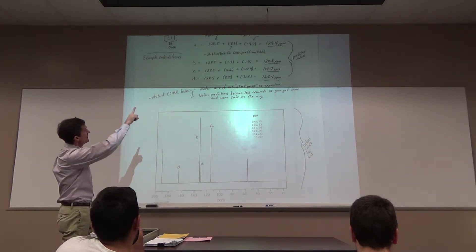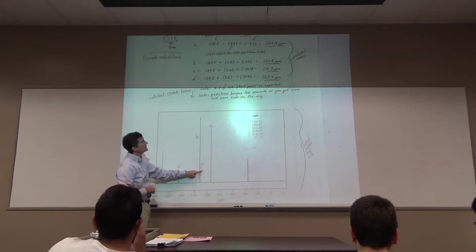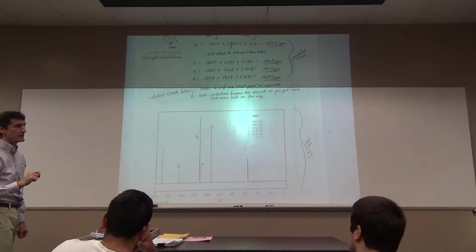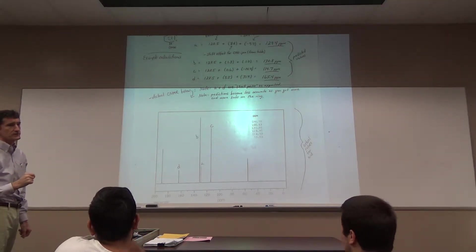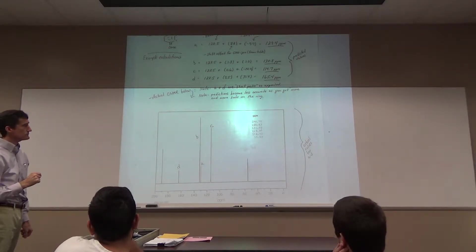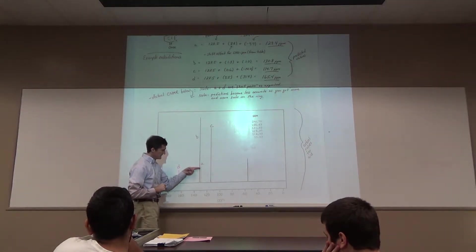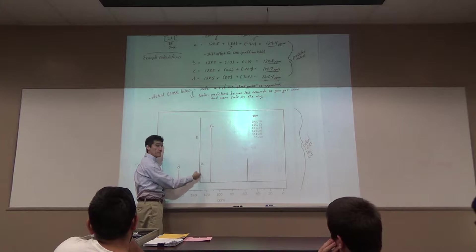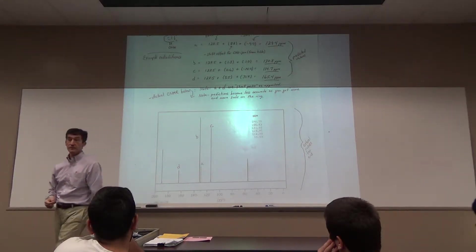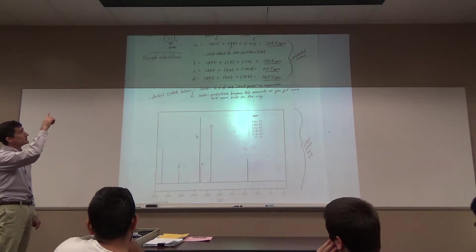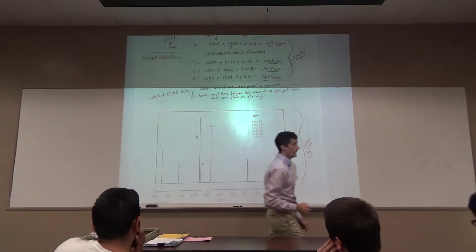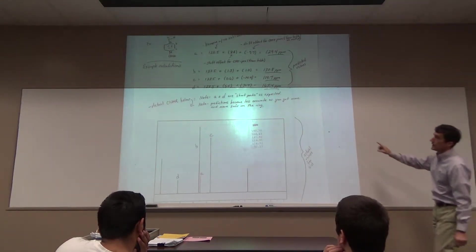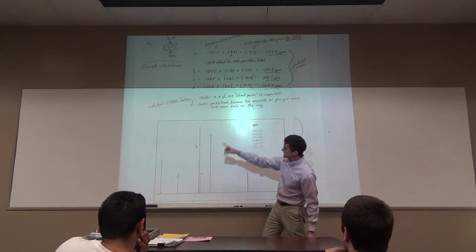I predict one more upfield at about 114-115 - do I have one about 115? Yes, that's why I called that C. A and B are pretty similar at about 130, and indeed they are. You have to be careful - you can't say just because A has a lower predicted value you assign it there; there is some error in these calculations. It's not highly precise, and the more substituents on the ring the less precise it gets. But why am I doubly confident that this is A? Because A would be a short peak, and that gives more confidence in assigning it.